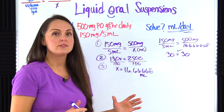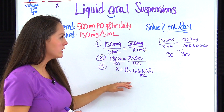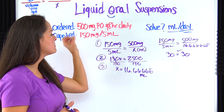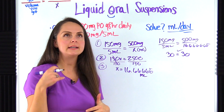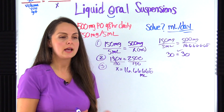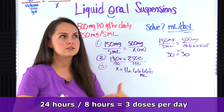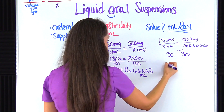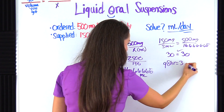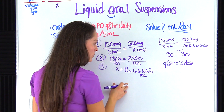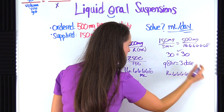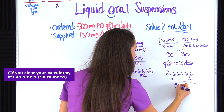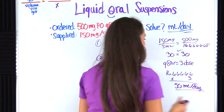But we're not done — we need milliliters per day. Going back to the problem, the frequency is every eight hours daily. There are 24 hours in a day, so 24 divided by eight equals three doses per day. Since 16.6666 mL is per dose, we multiply by three. 16.6666 repeating times three gives us 50 milliliters per day. That is the final answer.